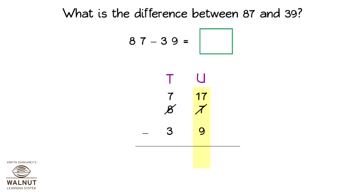Now, we can subtract. We can subtract the units and then we subtract the tens. That gives us the final answer. So, 87 minus 39 is equal to 48.